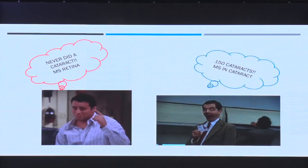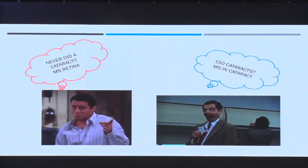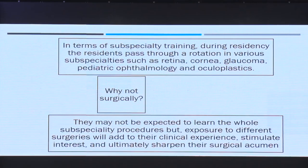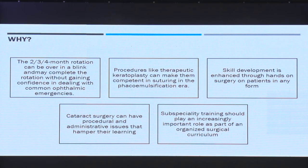We do not want to produce an MS in cataract - we want an MS in ophthalmology. Previous speakers highlighted rotating residents through various subspecialties - why not rotate them surgically as well? They may not be expected to learn the whole subspecialty procedure, but exposure to subspecialty surgeries will sharpen their surgical acumen and hand-eye coordination. These are superspecialties now, and the 2-3 month rotation can be invaluable. Small procedures like therapeutic keratoplasty can teach suturing that is no longer done in the phacoemulsification era.